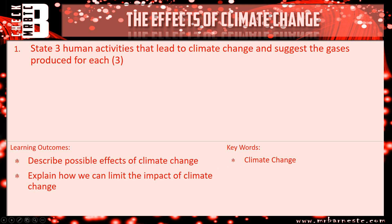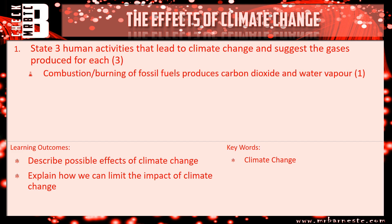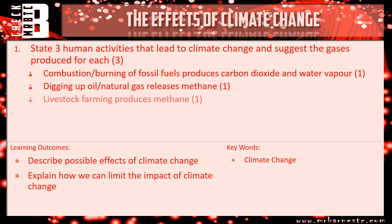Let's see how you've done. Question one: state three human activities that lead to climate change and suggest the gases produced for each. Starting with combustion — the burning of fossil fuels produces carbon dioxide and water vapour, so you get one mark for mentioning combustion. The second method is digging up oil or natural gas, which releases methane. Livestock farming also releases methane, and bacteria at landfill sites produces methane. All three of those final ones produce methane — one mark each, maximum of three.